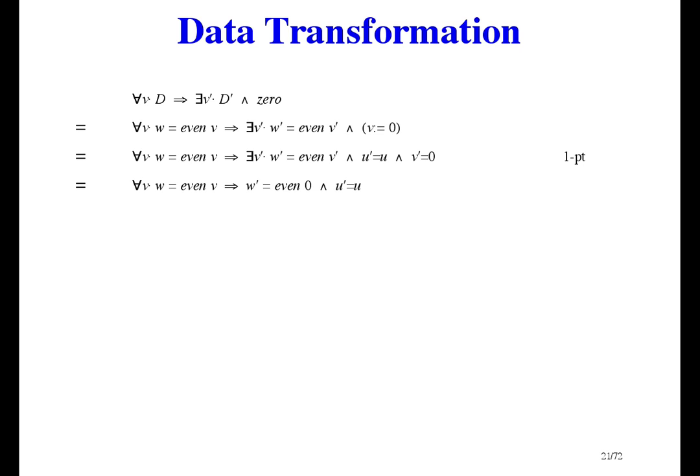This assignment is in a world where the variables are u and v — there isn't any w in the old world. So the assignment is v prime equals zero and u prime equals u. We can use one point to get rid of exists v prime because we have the conjunct v prime equals something. Even zero is true, so that simplifies. But the tricky part is to get rid of for all v. We can't use one point because there isn't any v equals something in the antecedent, so we use the change of variable law. The function f is even, so we're changing from a variable with domain nat to a variable with domain even nat, which is bin.